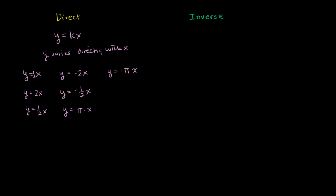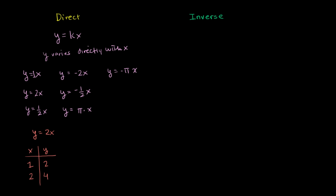To understand this more tangibly, let's think about what happens with a specific scenario. Let's take y = 2x and explore why we say they vary directly. If x = 1, then y = 2. If x = 2, then y = 4. When we doubled x — going from 1 to 2 — the same thing happened to y: we doubled y. That's what it means to vary directly. If we scale x up by a certain amount, we scale up y by the same amount, and vice versa.